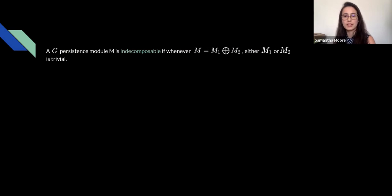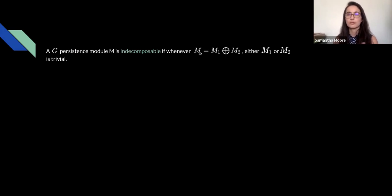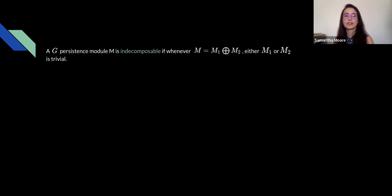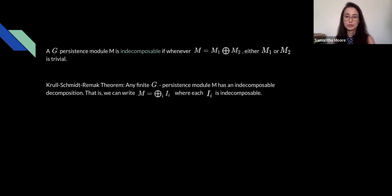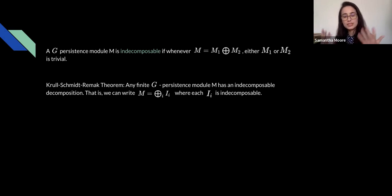Indecomposable modules are those that can't be broken down further using direct sum. If M can be written as M1 ⊕ M2, then either M1 or M2 must be the zero module. The Krull-Schmidt-Remak theorem says any finite persistence module can be written as a direct sum of indecomposable modules — so indecomposable modules are our building blocks for all persistence modules.